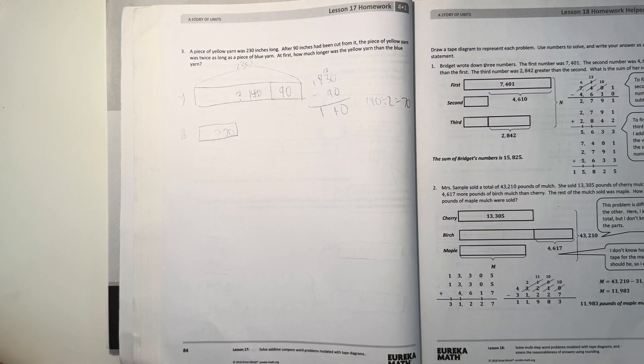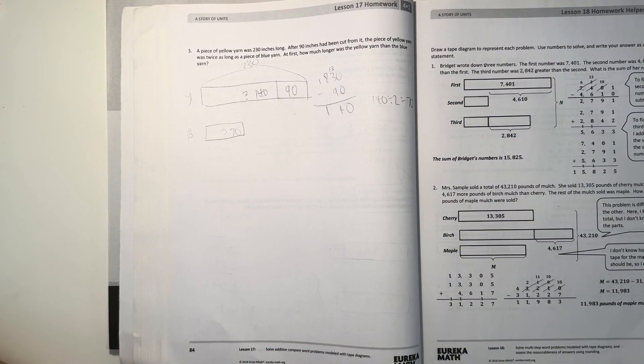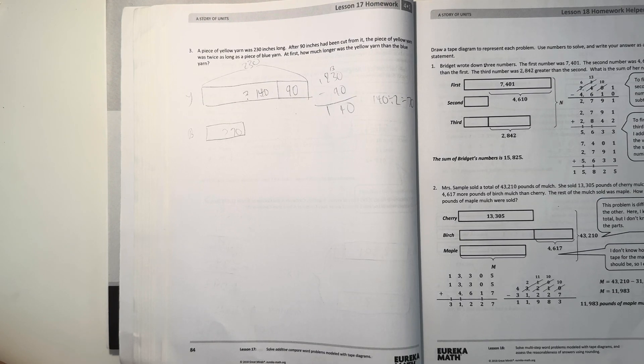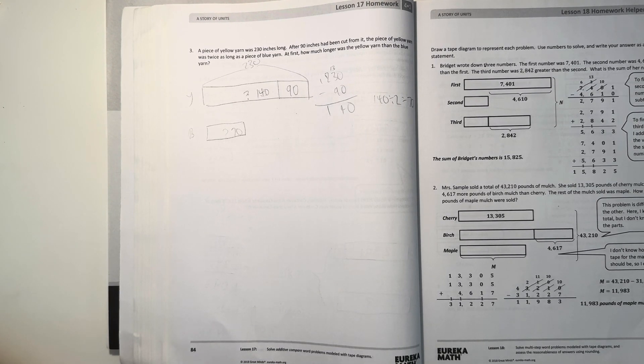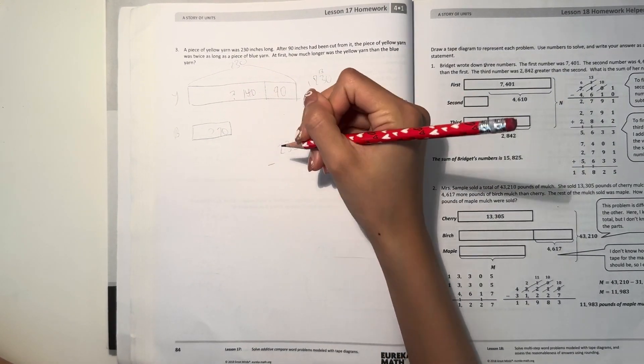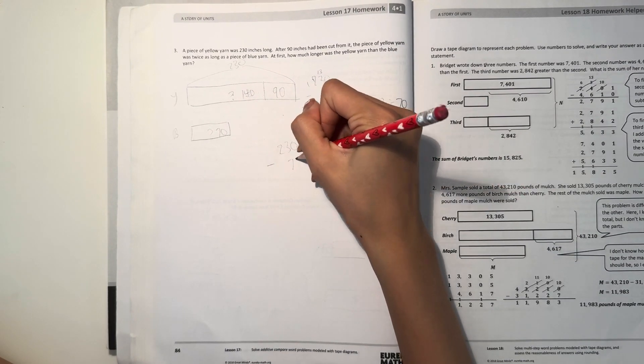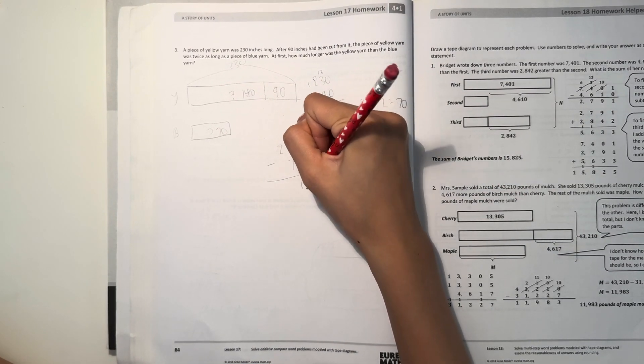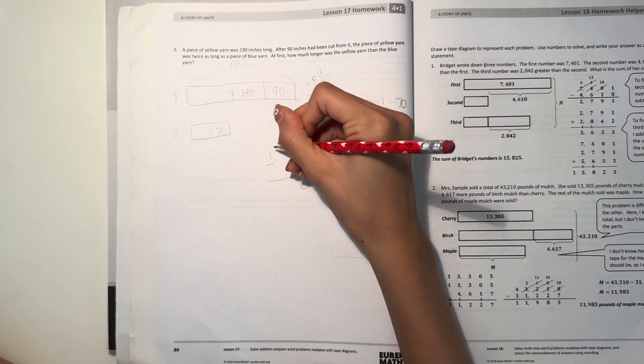So now it says, how much longer was the yellow yarn than the blue yarn at first? So at first the yellow yarn was 230 inches long. And then the blue yarn was always 70 inches. So then 0 minus 0 is 0. 3 minus 7. Borrow a 10.